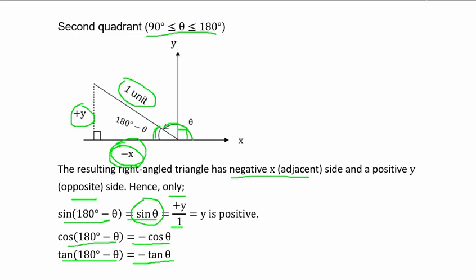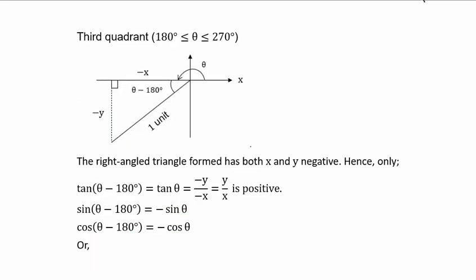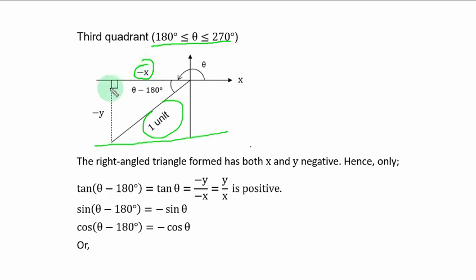Now we have the third quadrant, that is between 180 degrees and 270 degrees. The hypotenuse is always unit one. In the third quadrant the x-axis is negative and the y-axis is also negative. We have the whole of this angle — from here to here is theta, that is angles on a straight line. So if from here to here is 180, this remaining part becomes theta minus 180 degrees.